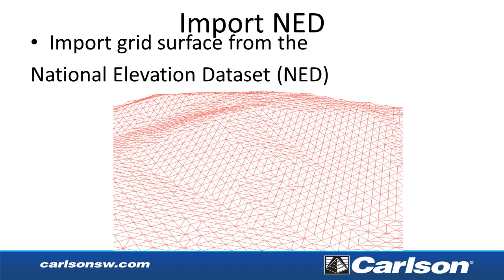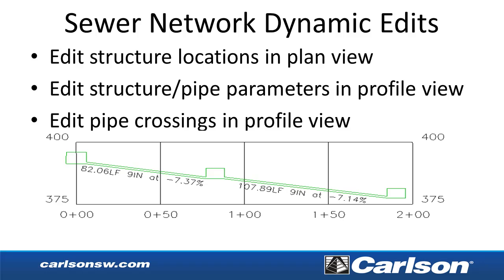There's a new method to import a grid surface from the National Elevation Dataset. For the sewer network and pipe model, there are new commands to edit structure locations in plan view, and to edit structures, pipes, and crossings in profile view — any of these edits will update the model dynamically. For example, you can pick a structure and move it up and down, or pick a pipe and change the slope or step up in the profile view.